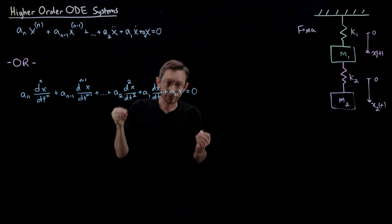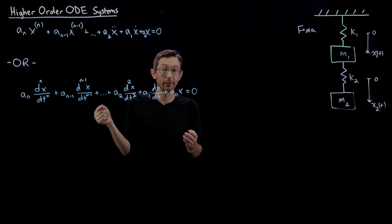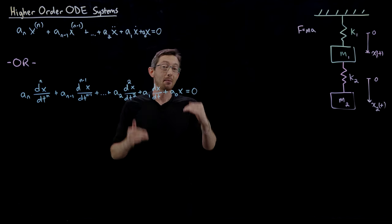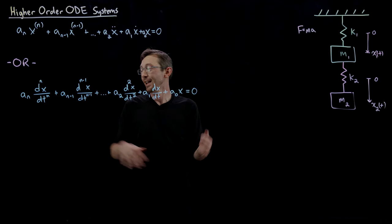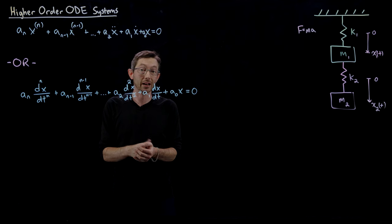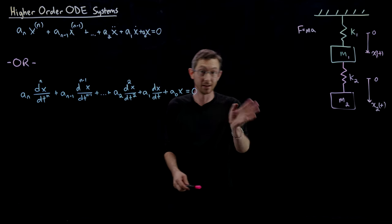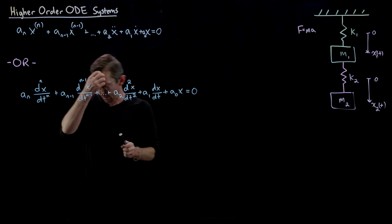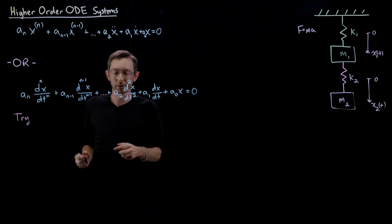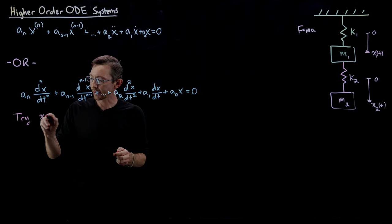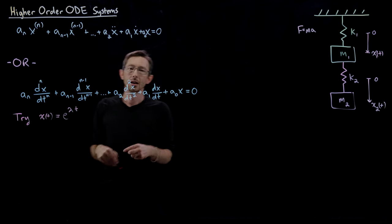We've actually solved these kinds of ordinary differential equations before, for second-order systems, by guessing the solution would be some exponential function. And that's exactly what we're going to do again today. So we're going to try x(t) = e^(λt), just like before.